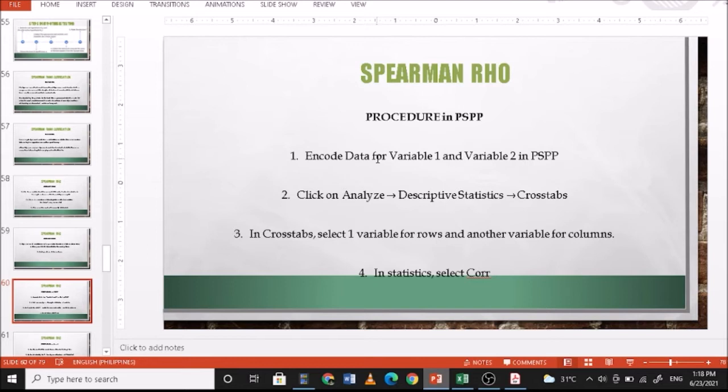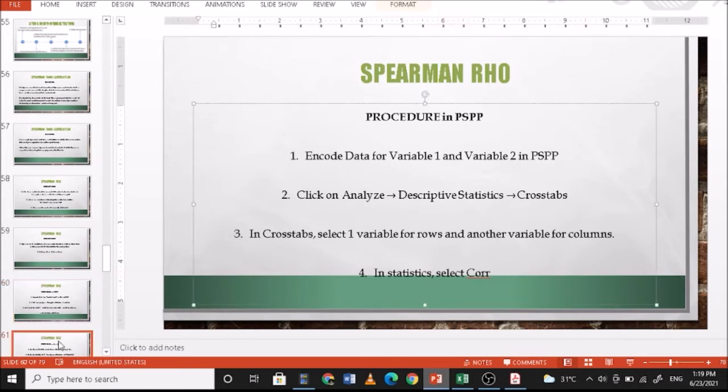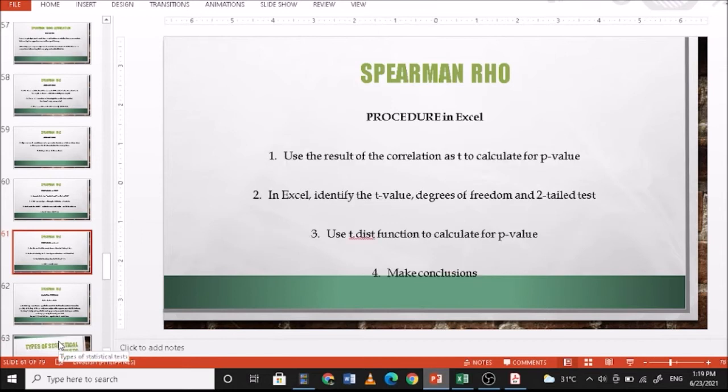Procedure in PSPP: Encode data for variable 1 and variable 2 in PSPP. Click on Analyze, Descriptive Statistics, and Crosstabs. In Crosstabs, select one variable for rows and another variable for columns. In Statistics, select Correlation. PSPP does not really have Spearman Rho that will give you a p-value. Your result is actually a p-value.